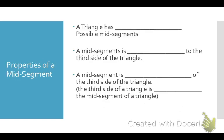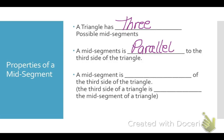Mid-segments have some properties. Every triangle has three possible mid-segments because it has three sides. A mid-segment is always parallel to the third side of the triangle.